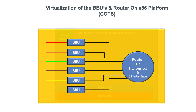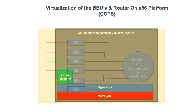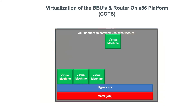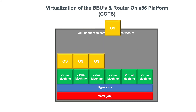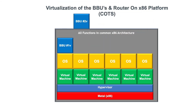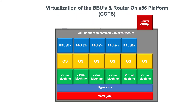But in the new configuration, we're going to virtualize all of those BBUs. We'll use a common off-the-shelf server — an x86-based platform with a hypervisor — which in turn has multiple virtual machines running on top. Each one of those virtual machines with the appropriate operating system supports a BBU. Multiple BBUs, depending on the power of the x86 platform, may be supported, along with a virtual router which could be based on an SDN, or software-defined networking, architecture.